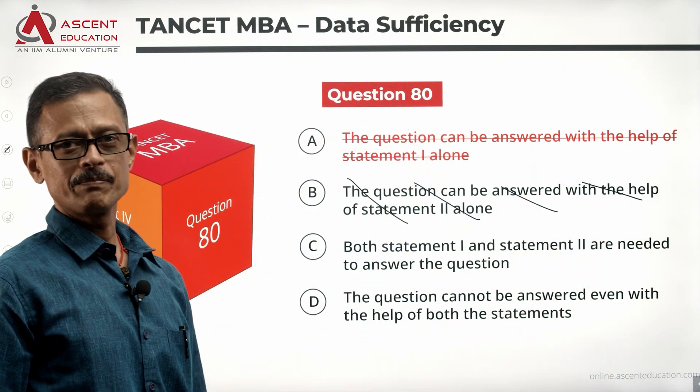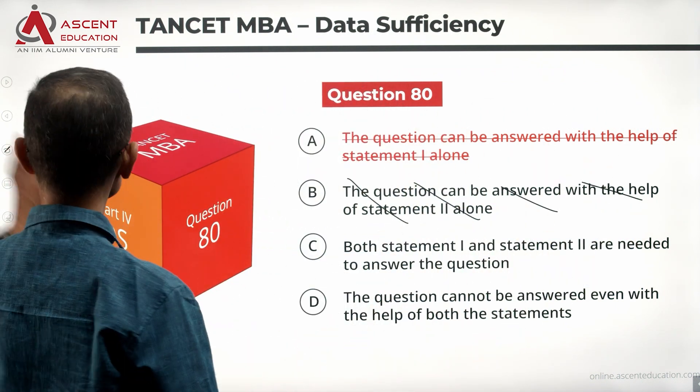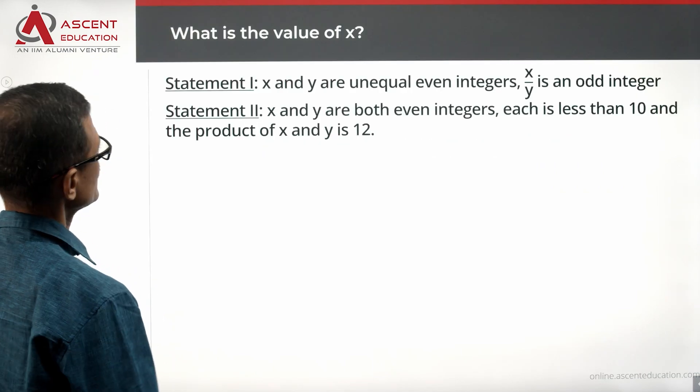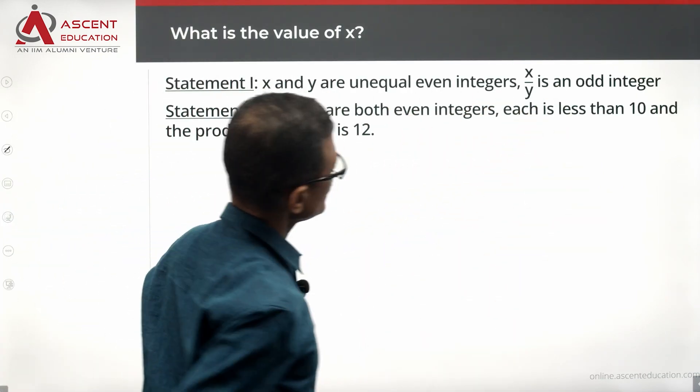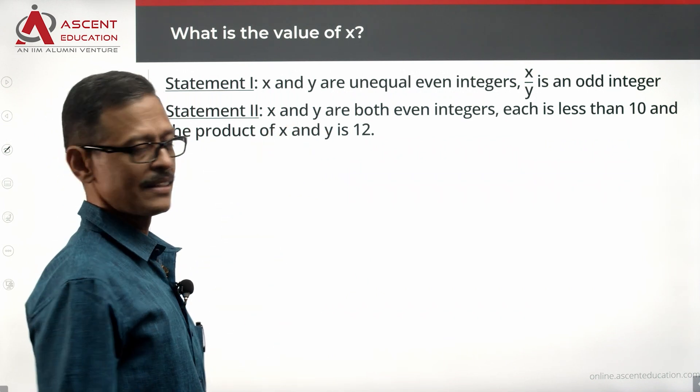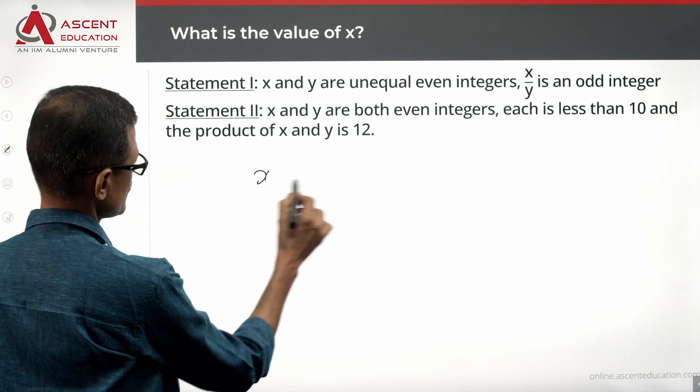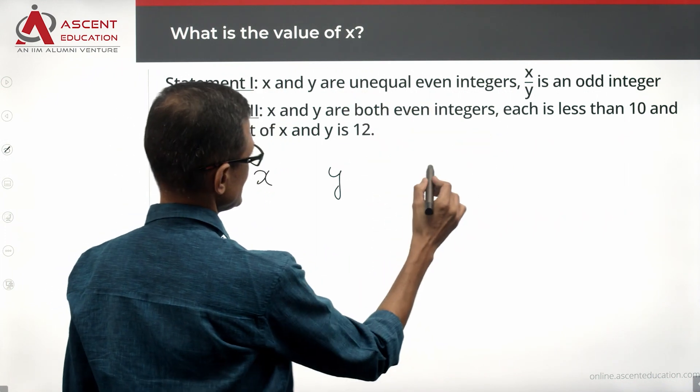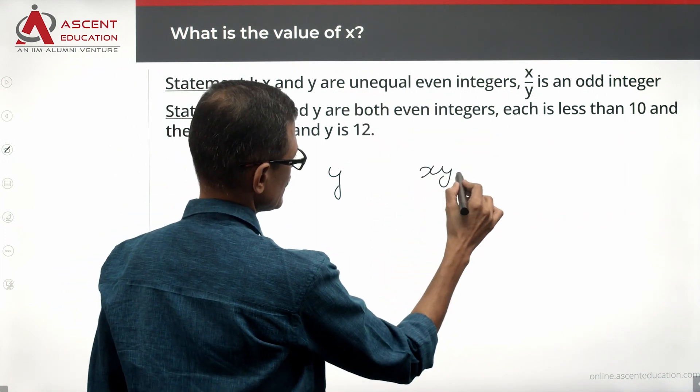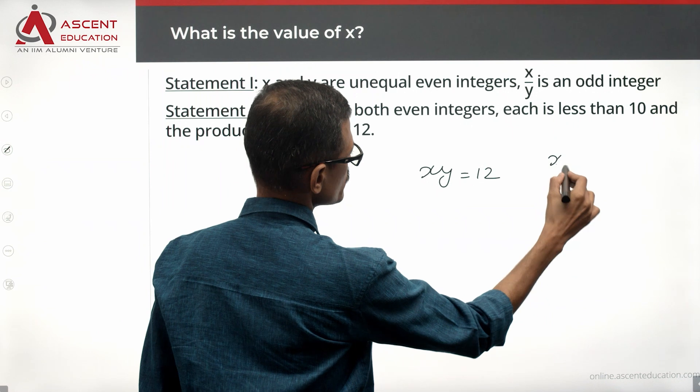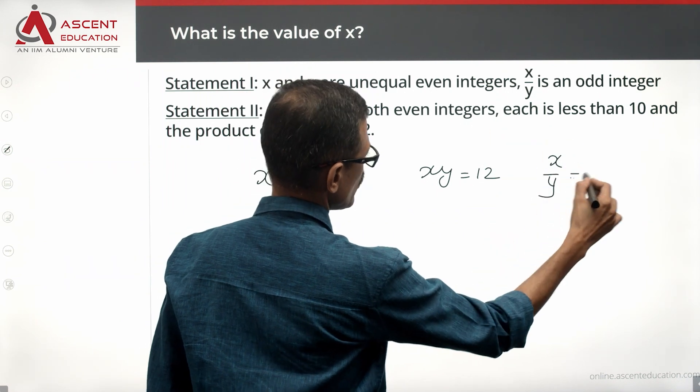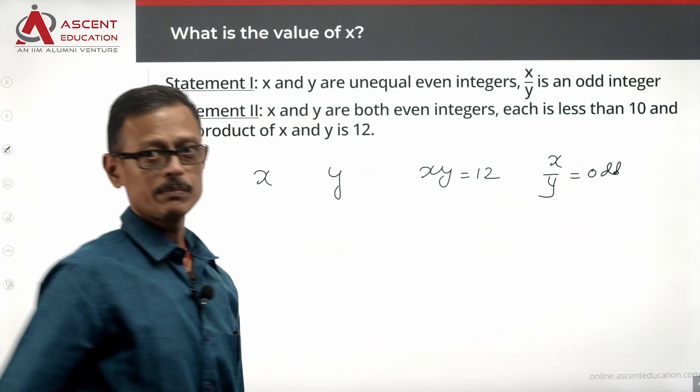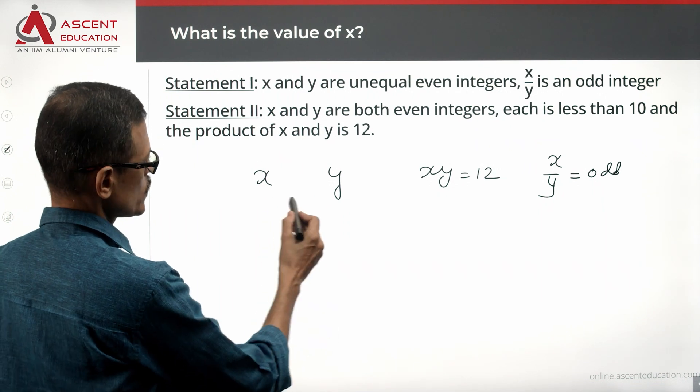Let's see. X and Y are unequal even integers. X by Y is an odd integer in statement 1. In statement 2, X and Y we know both are even, both should be less than 10, X times Y should be 12, and we need X by Y to be an odd integer. Let's work it out.